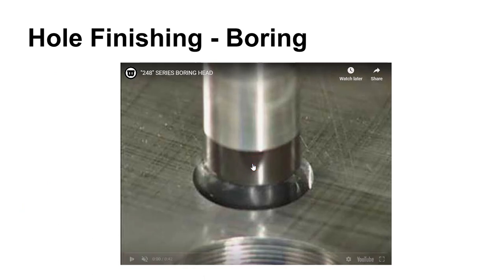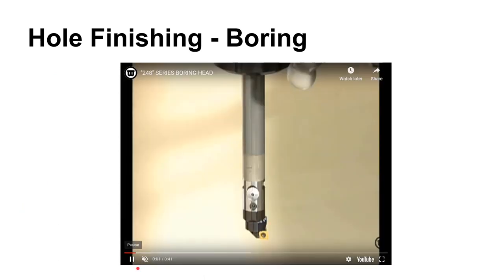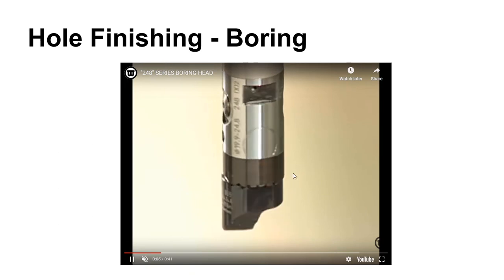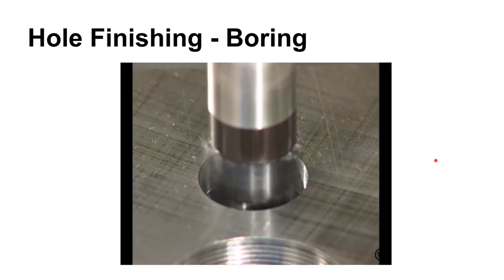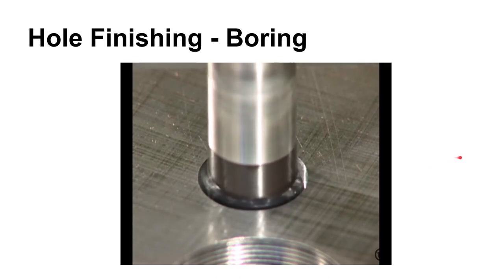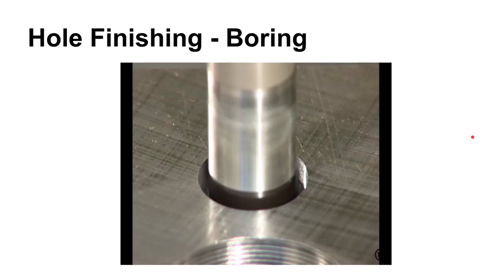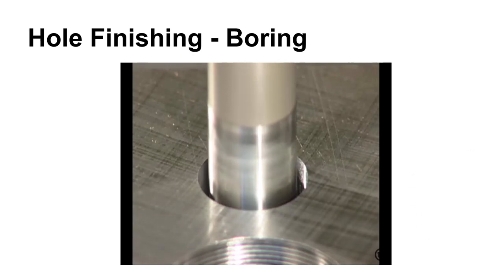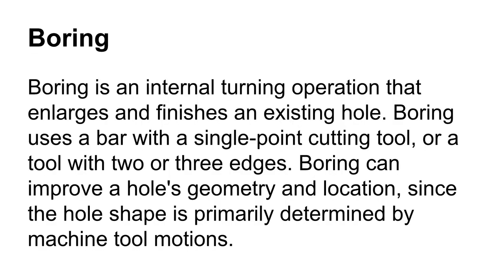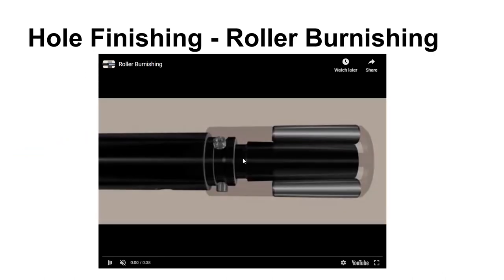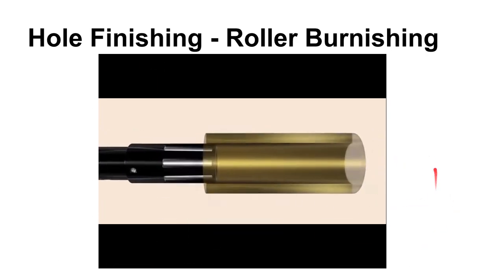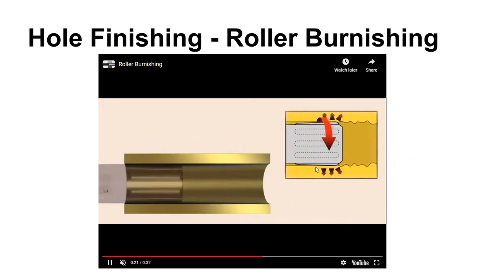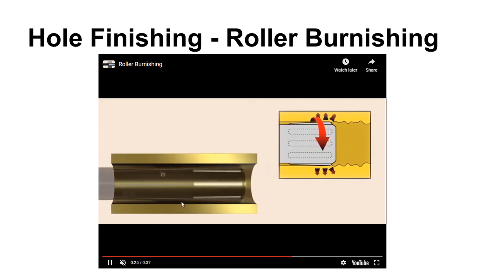Boring can also be performed on a mill using a boring bar similar to what you'd use on a lathe — except here the bar spins and is fed into the hole. Boring improves surface finish and roundness, and unlike reaming, can also improve the positional accuracy of a hole if it's not too far out of position.